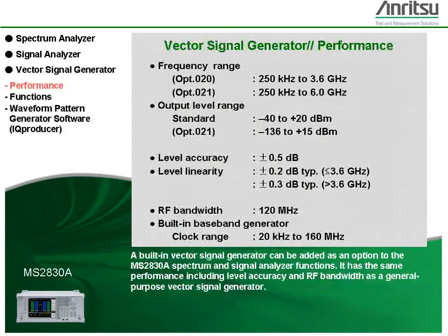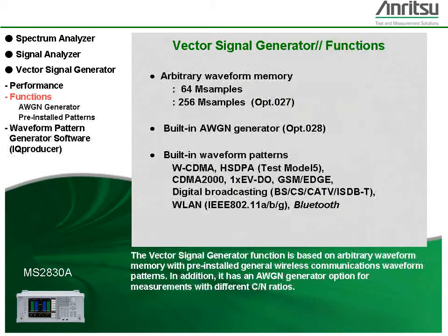A built-in vector signal generator can be added as an option to the MS2830A spectrum and signal analyzer functions. It has the same performance, including level accuracy and RF bandwidth, as a general-purpose vector signal generator. The vector signal generator function is based on arbitrary waveform memory with pre-installed general wireless communications waveform patterns. In addition, it has an AWGN generator option for measurements with different carrier-to-noise ratios.